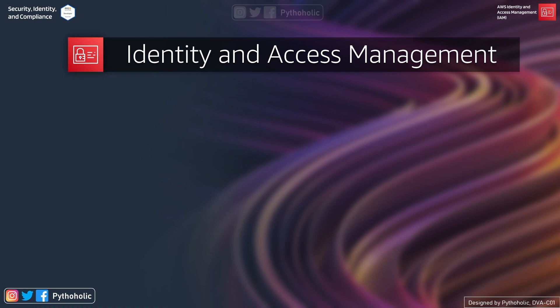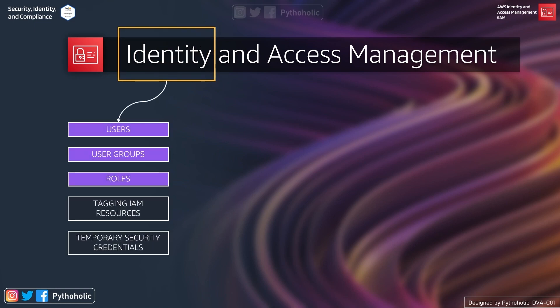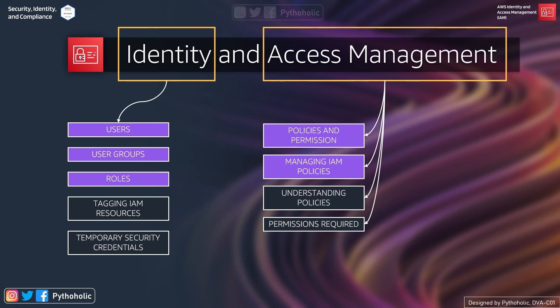To understand IAM, think of it as divided into two parts: the first is Identity and the second is Access Management. Under Identity, we discuss users, user groups, roles, tagging IAM resources, and temporary security credentials. Under Access Management, we discuss policies and permissions, managing IAM policies, and understanding permissions.